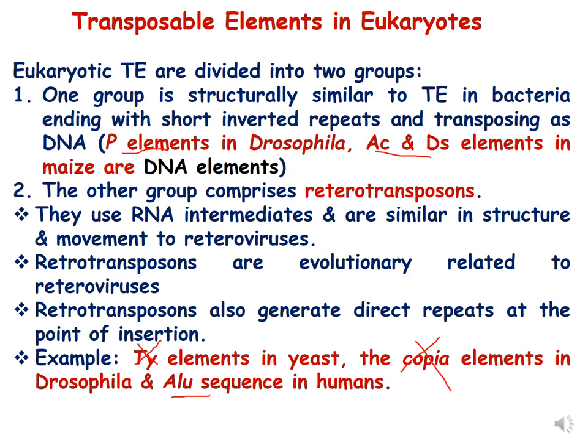Eukaryotic transposable elements are divided into two groups. One group is structurally similar to transposable elements in bacteria — they end with short inverted repeats and transpose as DNA. Examples are P elements in Drosophila, and AC and DS elements in maize. We have already discussed the typical structure of transposons or IS elements in the first part of this lecture series.